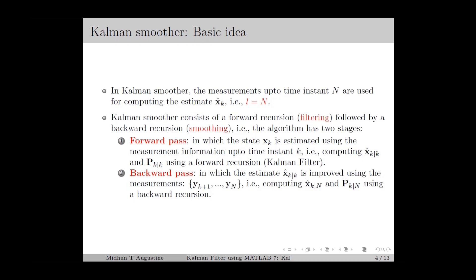In the backward pass, we improve the estimate x̂k|k using the measurements yk+1 up to yn. We compute x̂k|n and Pk|n using a backward recursion algorithm. In the backward pass, we require the measurement information yk+1 up to yn, which is not available at time instant k. Therefore, we must wait until the system has run up to n time instants and all measurements are obtained. The Kalman Smoother is therefore used for applications where real-time estimation is not required, and it is mainly used for post-processing of states.